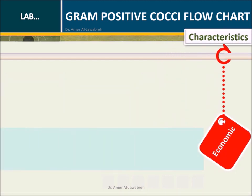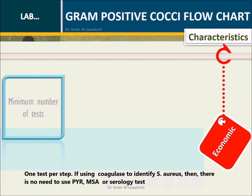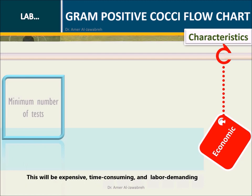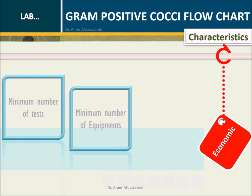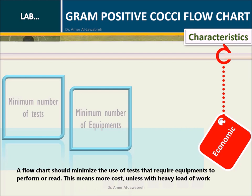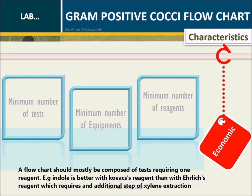Economic — minimum number of tests, one test per step. If using coagulase to identify S. aureus, then there is no need to use PYR, MSA, or serology tests, as this will be expensive, time-consuming, and labor-demanding. Minimum number of equipments: a flowchart should minimize the use of tests that require equipment to perform or read, as this means more cost and less efficiency with a heavy load of work. Minimum number of reagents: a flowchart should mostly be composed of tests requiring one reagent. For example, indole is better with Kovac's reagent than with Ehrlich's reagent, which requires an additional step of xylene extraction.